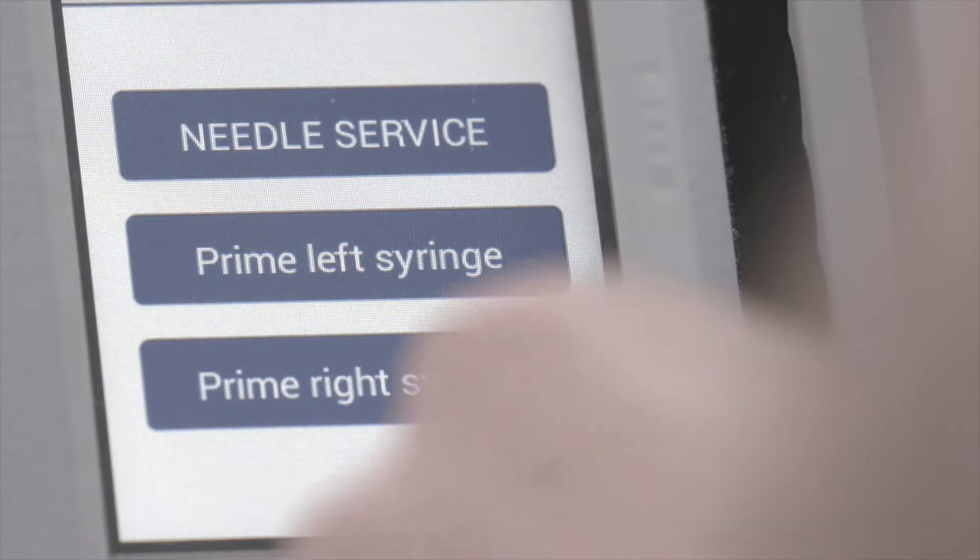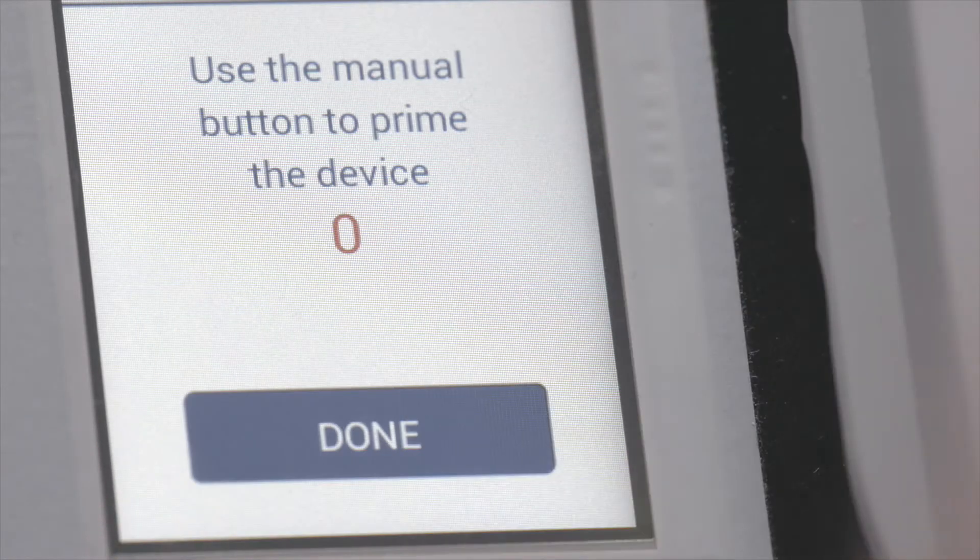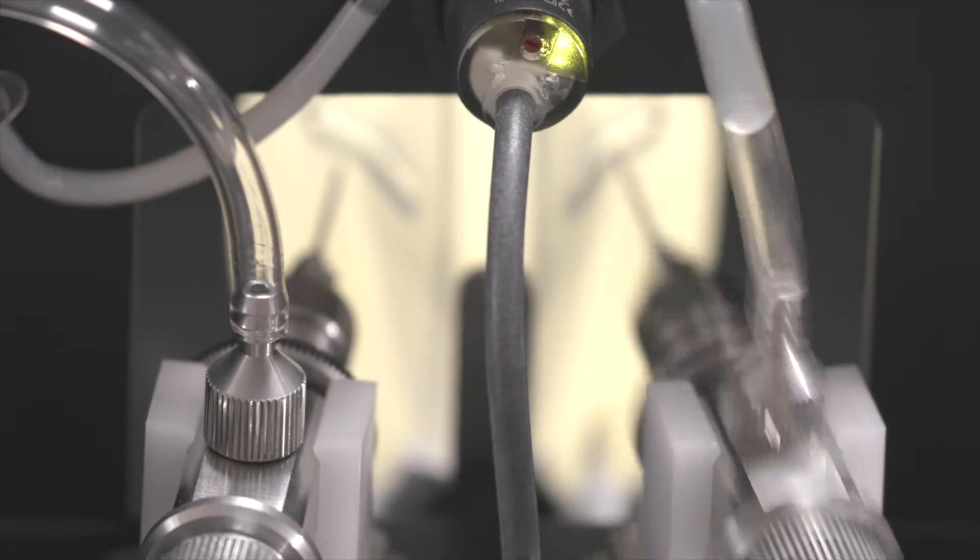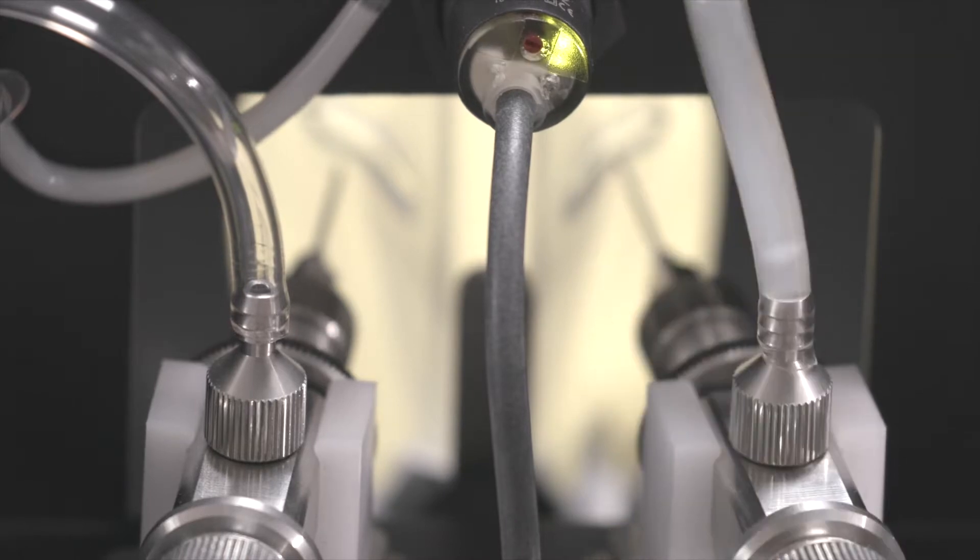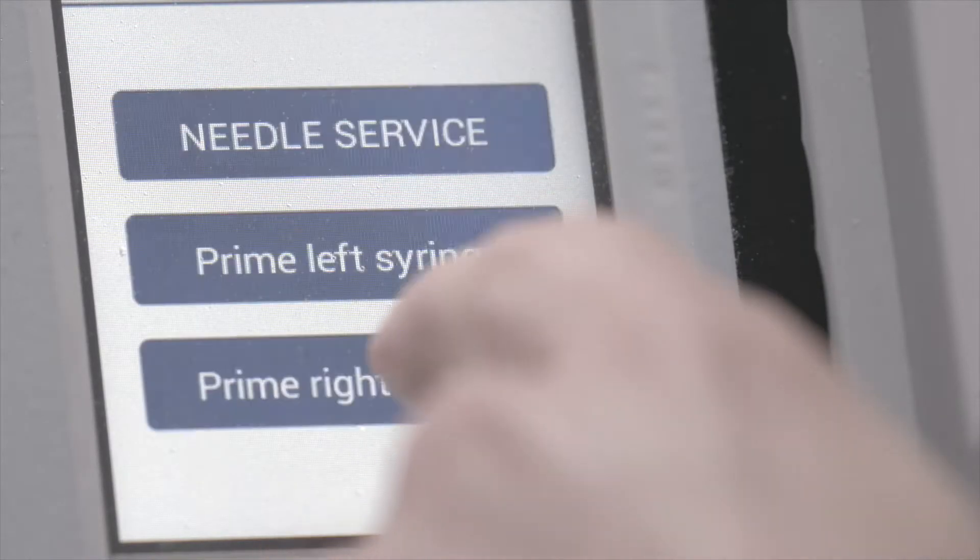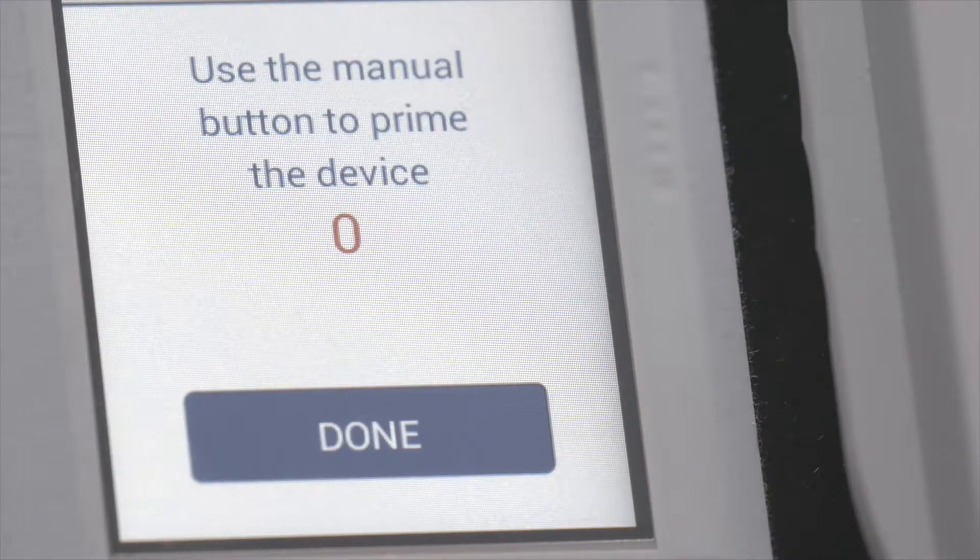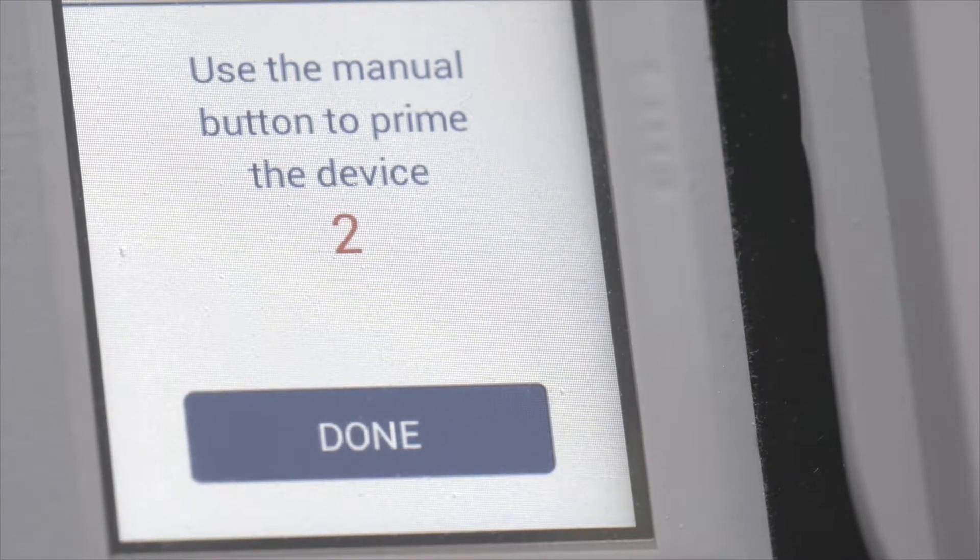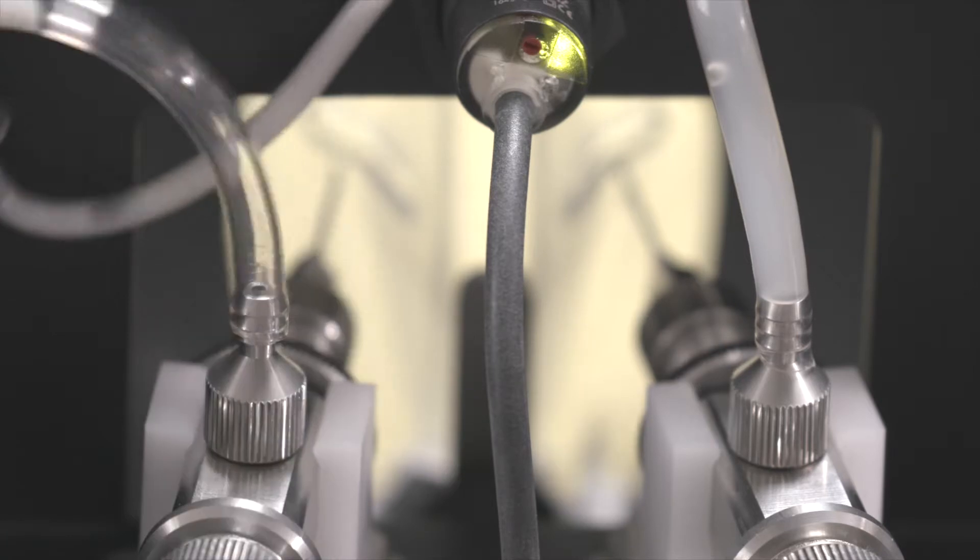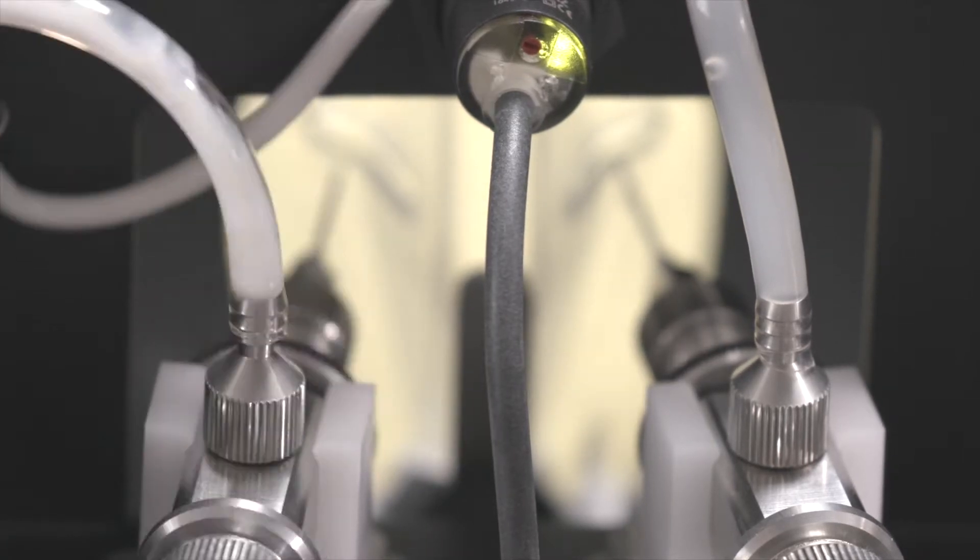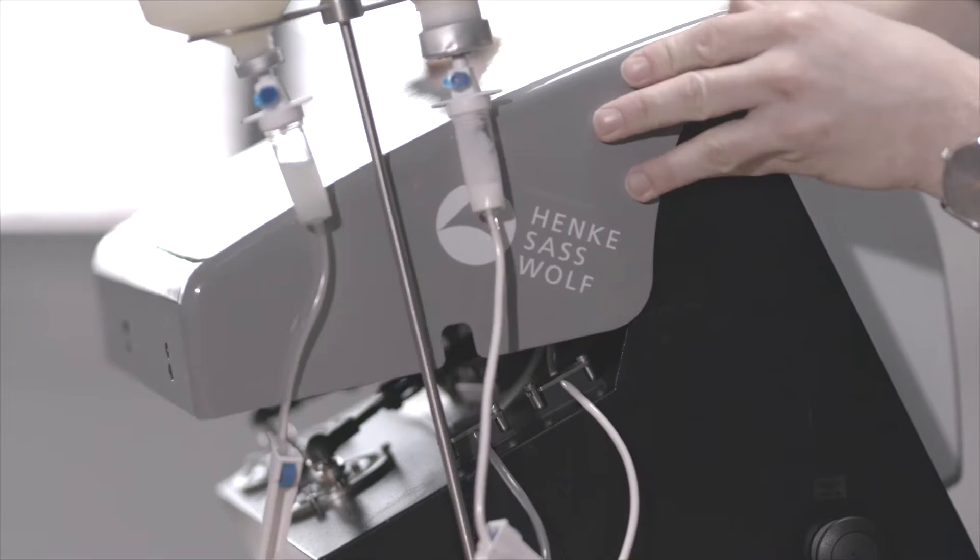Touch Prime Left Syringe on the screen. Push the manual button to simulate one injection and repeat this step until the syringe is primed. Touch Done to return to the setup screen. When working with both syringes, repeat this action with the Prime Right Syringe function as well. The syringes are fixed doses of 0.5 milliliters per shot. Other volumes are available upon request.